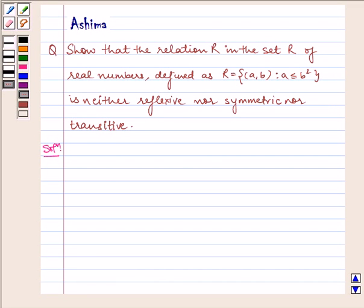Hello and welcome to the session. Let us discuss the following problem today. Show that the relation R in the set R of real numbers, defined as R = {(a,b) : a ≤ b²}, is neither reflexive nor symmetric nor transitive.